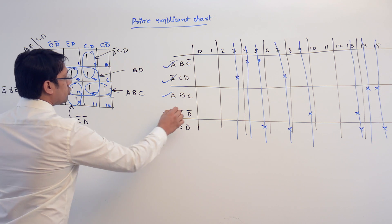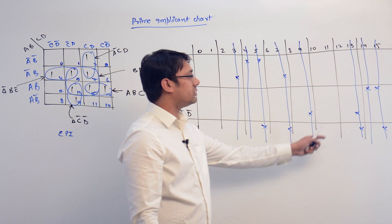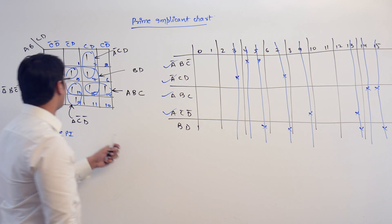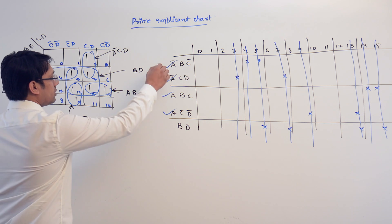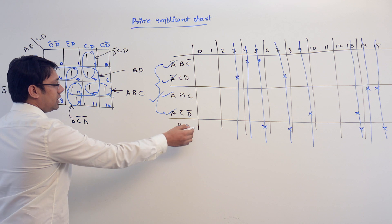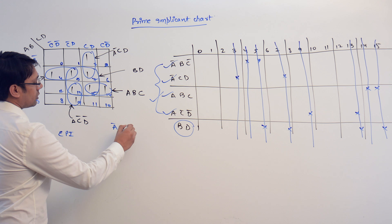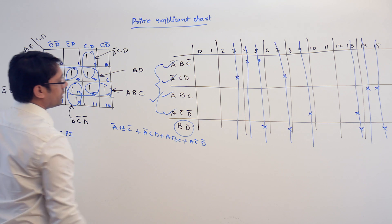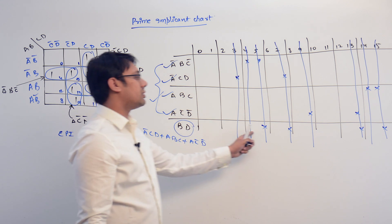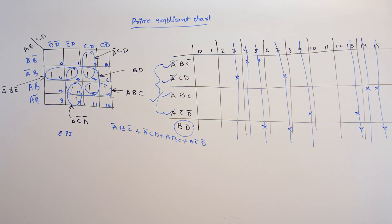Therefore these four should be there in the solution. However, B, D is not having any term which is not covered by the others — every term B, D covers is already covered by all these four essential prime implicants. Therefore B, D need not be there in the solution. The solution equation is: A complement, B, C complement + A complement, C, D + A, B, C + A, C complement, D complement.